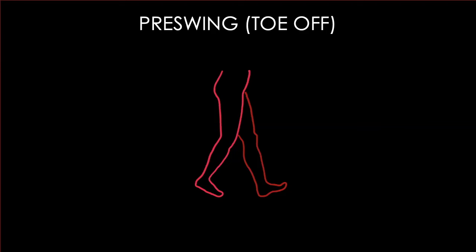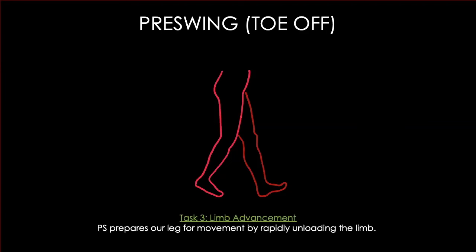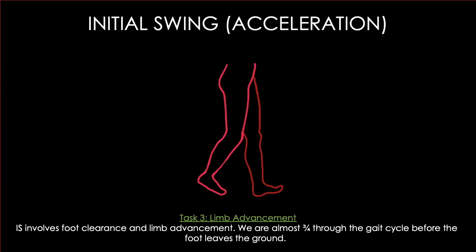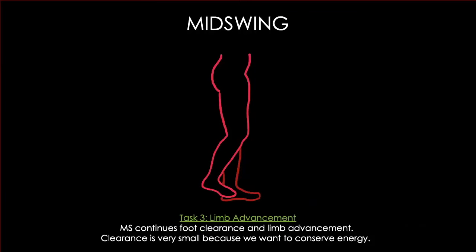During pre-swing we transition into task three: limb advancement. This prepares us to unweight our limb so we can take it off the ground and swing it forward. During initial swing we've now picked the limb up and are initiating movement in the swing phase. This phase involves clearing our foot from the ground — we're actually almost three-quarters of the way through our gait cycle before the foot even leaves the ground. In mid swing we're still advancing that limb forward. We don't want to pick the foot up too much because the body is trying to conserve energy — we just barely clear the foot to minimize muscle recruitment.